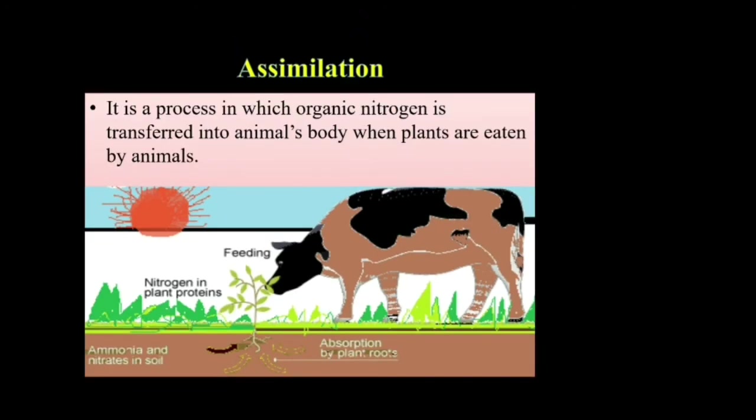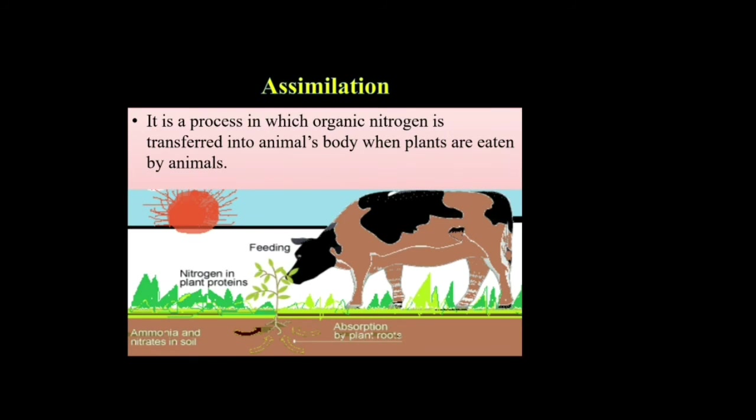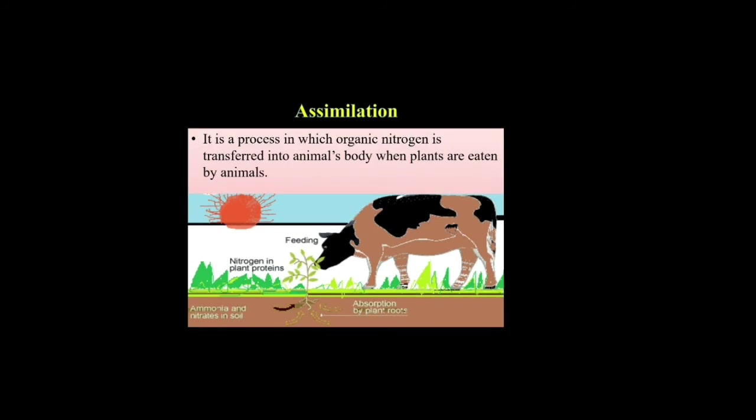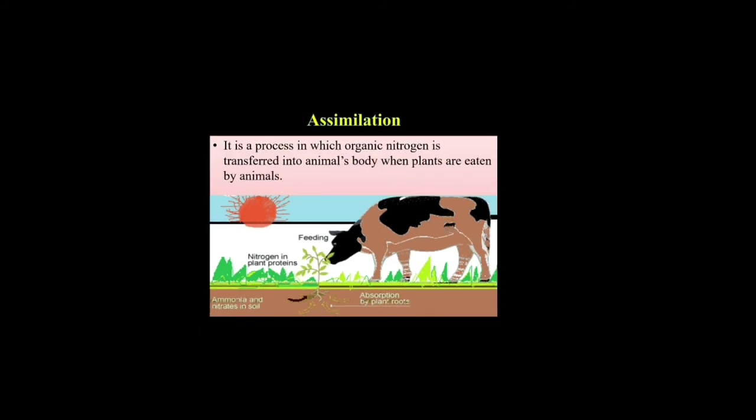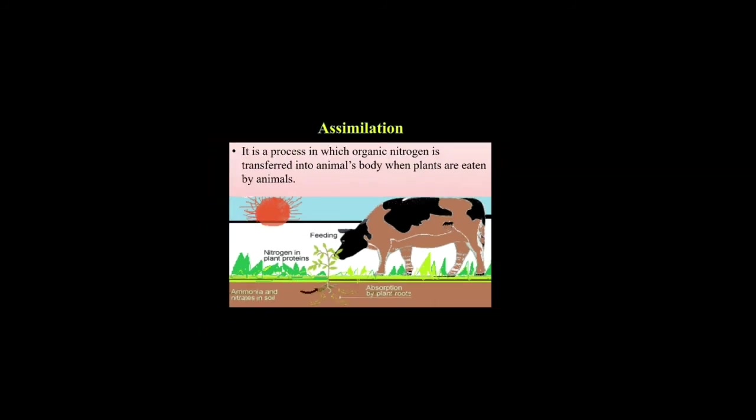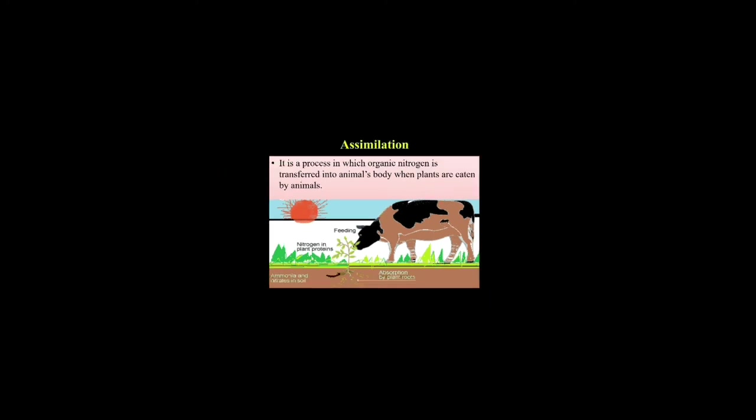Assimilation is the process in which organic nitrogen is transferred into an animal's body when plants are eaten by animals.